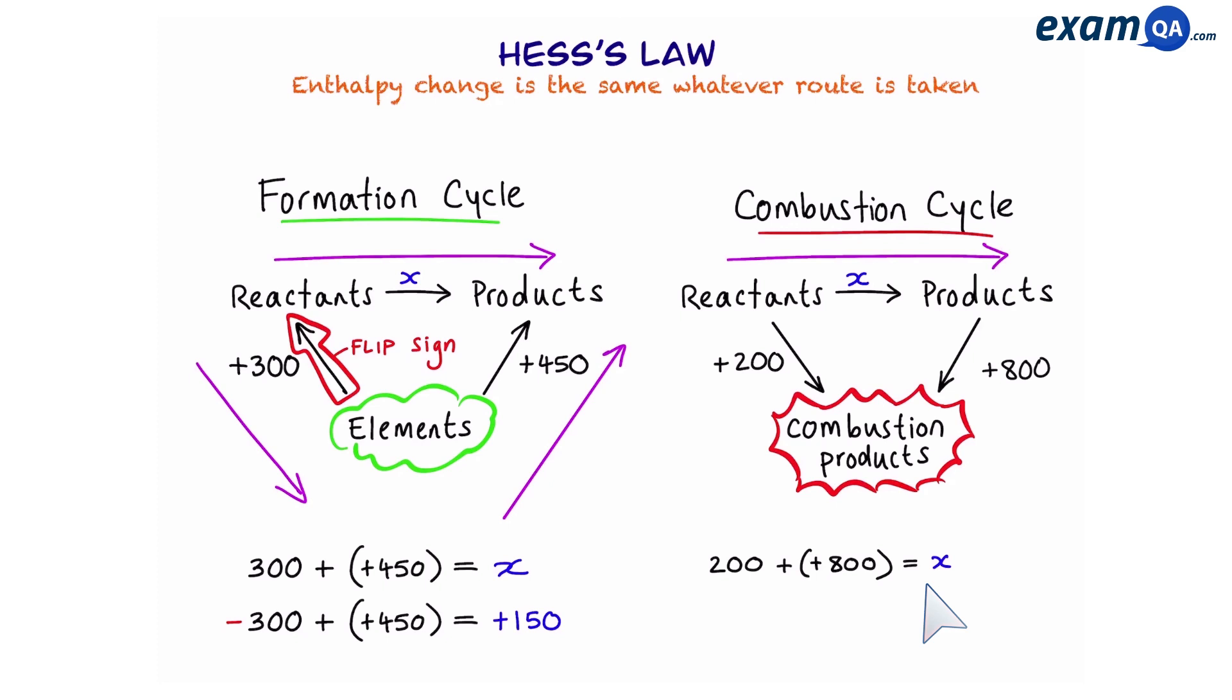However, we can see that according to Hess's law, this arrow is not going the right way. That means we're going to have to flip the sign. So that gives us 200 plus minus 800 and that should give us a final answer of minus 600.